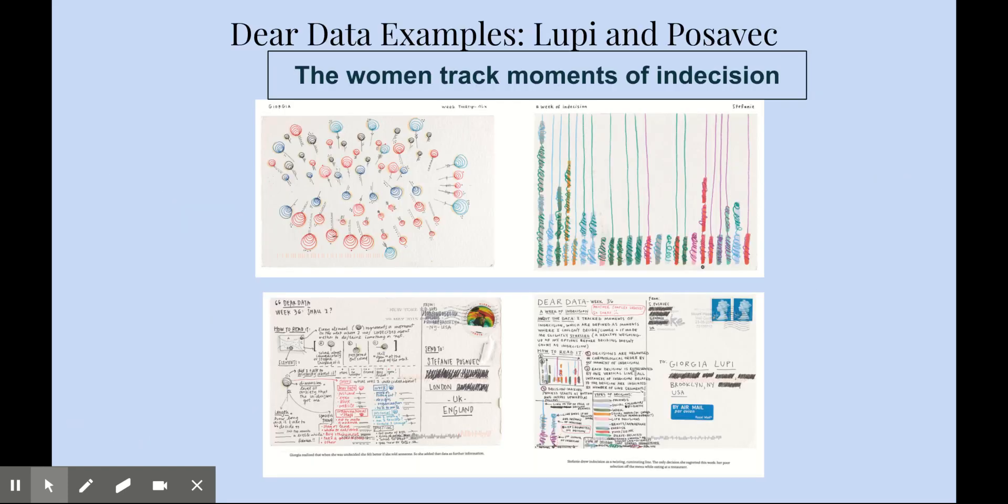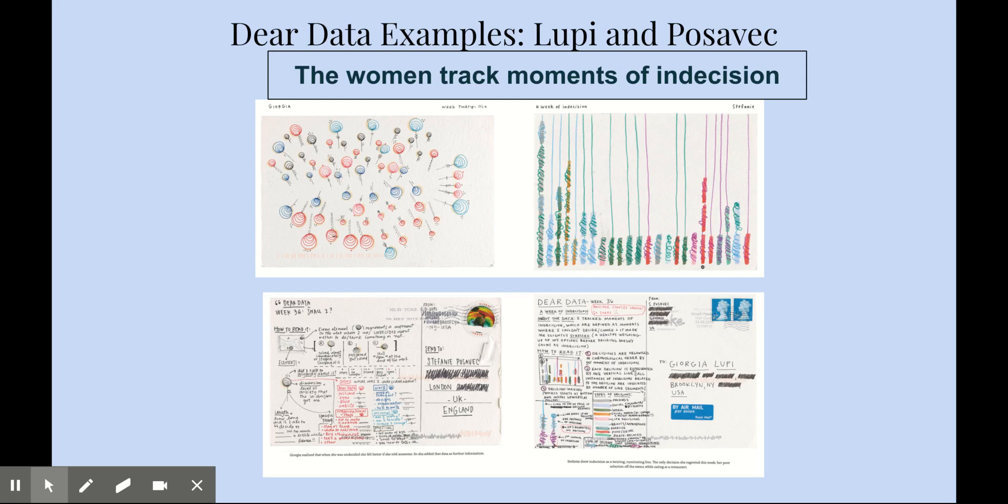These are some examples of the way that these two women were tracking their research. This is an example of one of their weeks of data, an example of their moments of indecision. You can see at the top, this is the visual representation, and at the bottom, this is the backside of their postcard and how the legend represents the front of the postcard. So you have Georgia and Stefanie's visual representation of data on top, and on the back is the key or legend. It's a real succinct way to show what they are tracking and what the tracking is representative of.